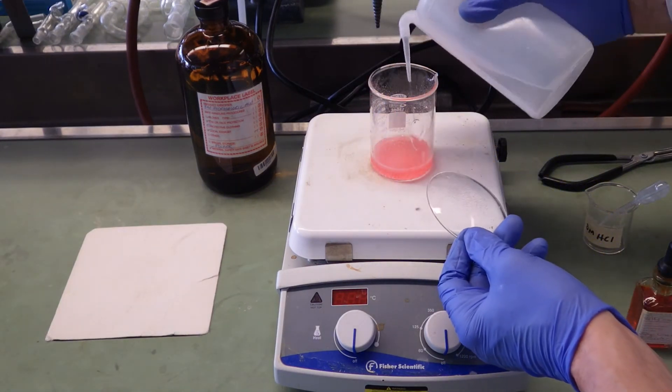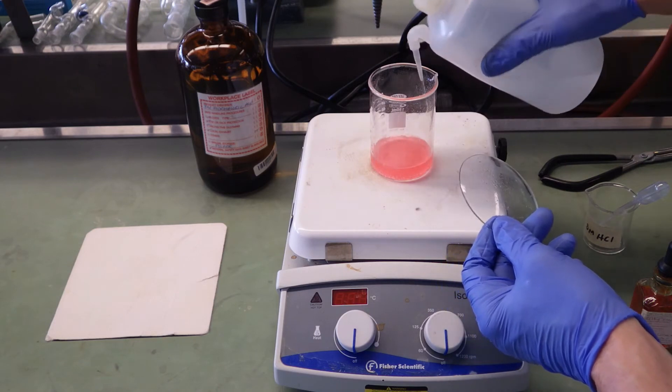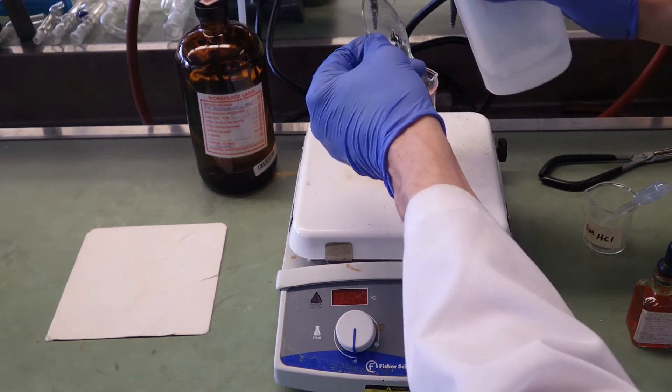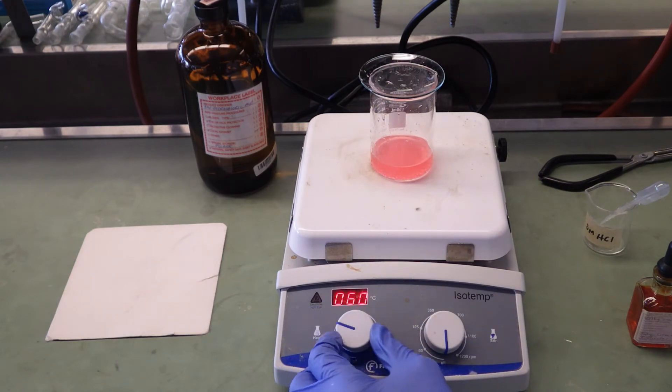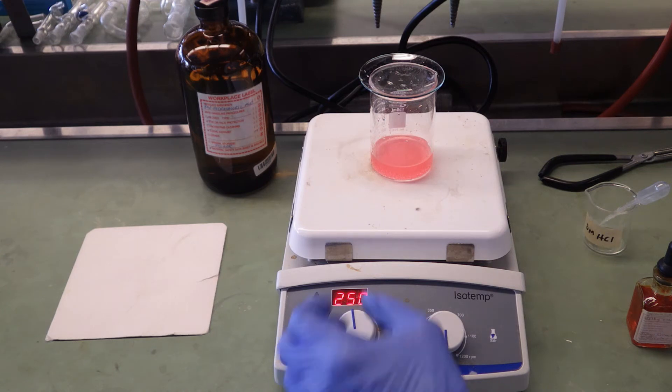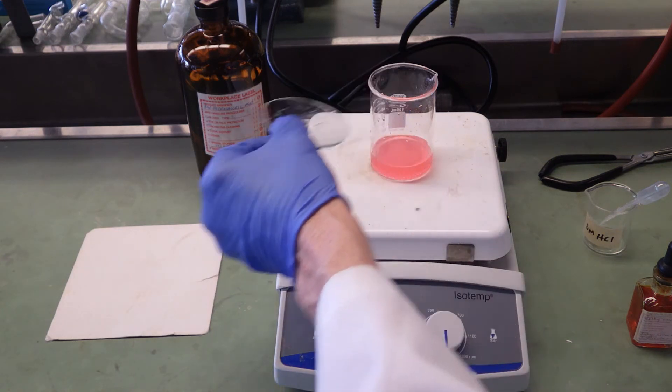I'll rinse down the sides of the beaker and the bottom of the watch glass to make sure everything gets into the beaker. I'm going to heat this at a fairly high temperature to boil down the water. And I'll have to remove that watch glass to make sure that the water can, in fact, boil out.